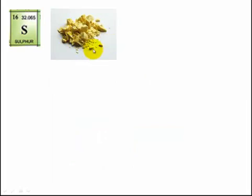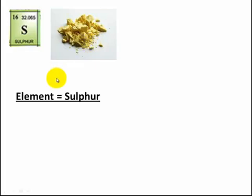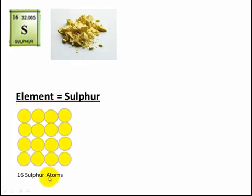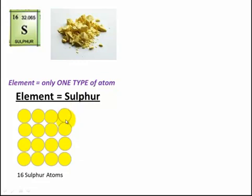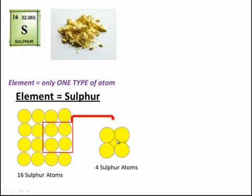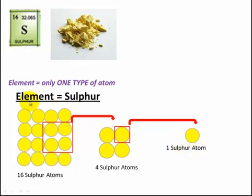Another example: sulfur. Compare that to magnesium - magnesium was a metal, it was lustrous, malleable, ductile, and hard. Sulfur by contrast is a very brittle, dull powder. It is also a non-conductor or very poor conductor of heat and electricity. The element is sulfur, made up of sulfur atoms - an element is only one type of atom. If we take four sulfur atoms and chop down to one, the smallest building block is the atom.